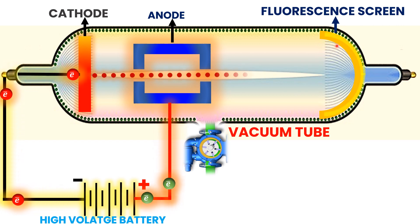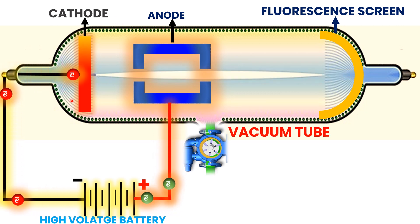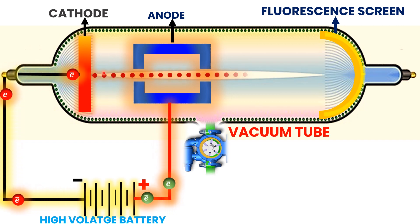The cathode rays travel from the cathode toward the fluorescent screen and cause it to glow. This experimental setup demonstrates that when a high potential difference is created between the cathode and anode metallic plates, rays are generated — and these rays are known as cathode rays.